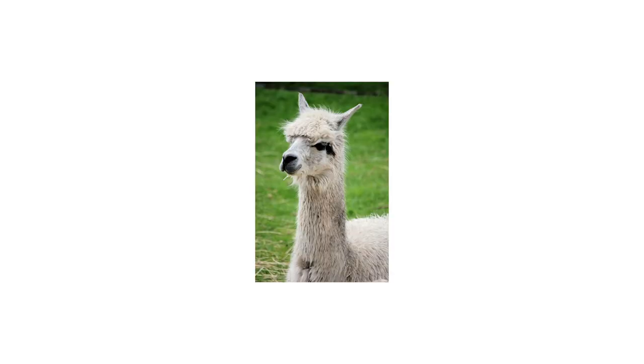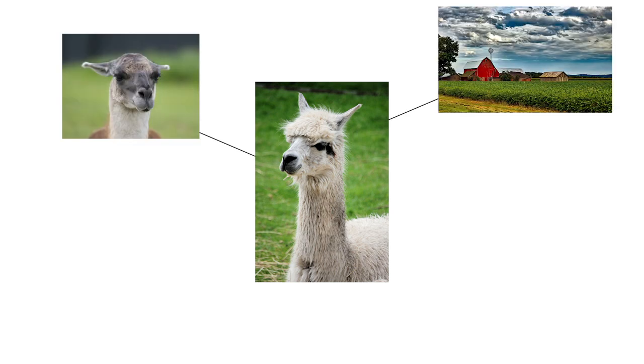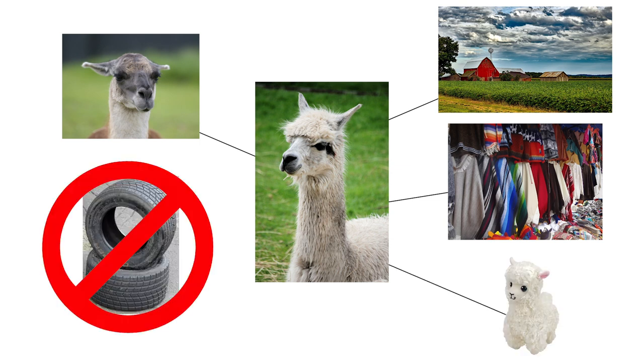Your phone does not understand the words that you're saying, but it does know associations between words. For example, llama. Llama is very closely associated to alpaca. It's also closely associated to farm. It's also associated with clothing or stuffed animals. It's not as associated with the word 'tire,' for example.